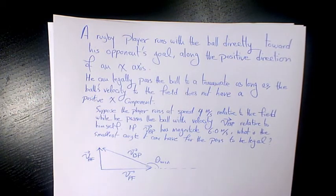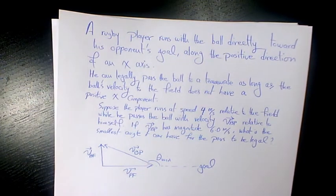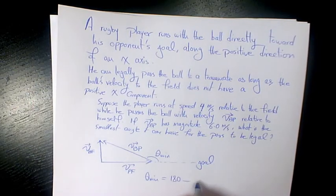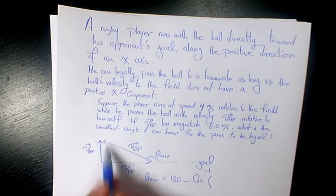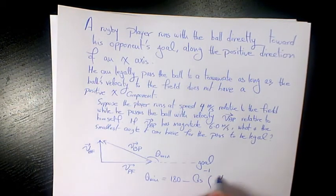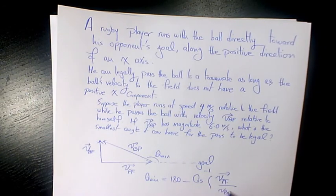So that's the smallest angle, and here is the goal. We can say theta minimum equals 180 minus cosine inverse of VPF — the velocity of the player with respect to the field, which is 4 meters per second — divided by VBP.